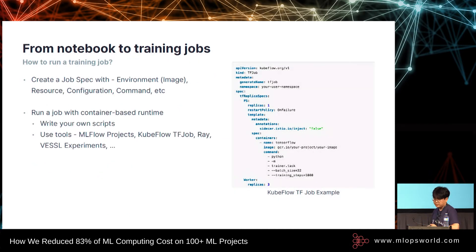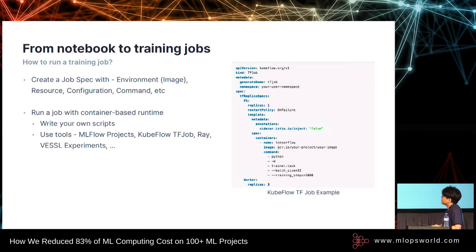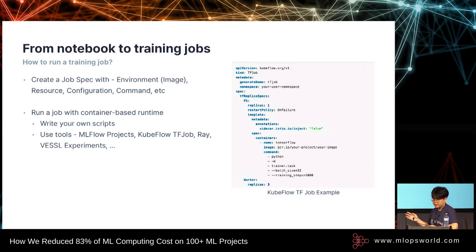How can you run a training job? Maybe some of you are familiar with Kubeflow or MLflow. You can define your training job using a well-known open source like Kubeflow or MLflow, or you can write your own script. On the right side, you can see an example of a Kubeflow TensorFlow job definition, which contains the Docker image, resource, commands, and other configurations. Most training jobs use container-based runtime — you just create your Docker image and run it with the image, resource, command, and some configurations.